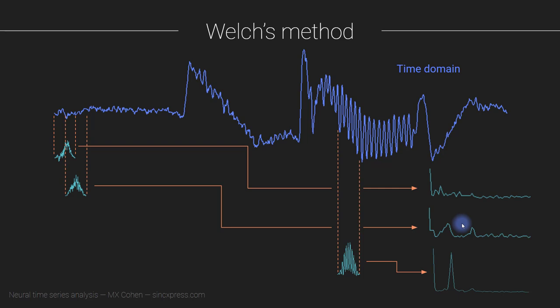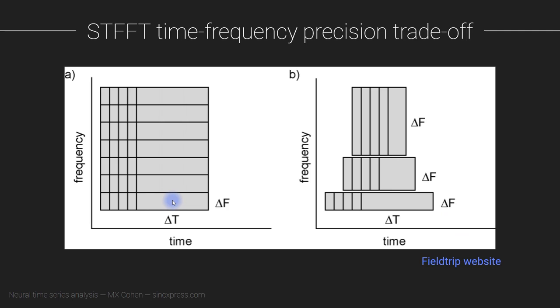There are several parameters that you can adjust in the short-time Fourier transform. That includes the size of the window. And the size of the window here is going to determine not only the temporal precision, but also the spectral resolution, of course, because if your time windows are really narrow, you have very few data points. So you don't have a lot of frequencies between zero and Nyquist.